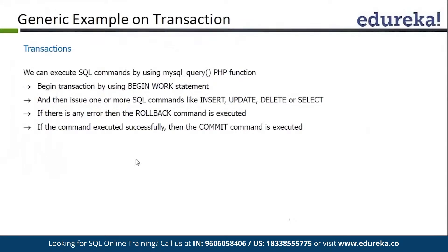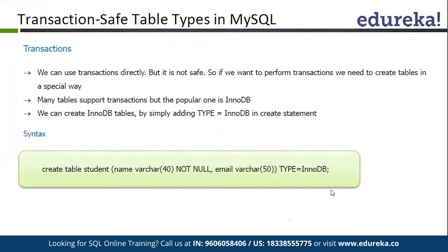We can execute SQL commands using MySQL query, and we can use transactions in PHP as well. We can use the MySQL query function to start, commit, or rollback transactions. It is always better to use a particular table type — basically we use InnoDB tables. InnoDB tables are called transaction-safe tables, meaning transactions can execute perfectly on these tables and our commit and rollback will work as per the ACID principle.